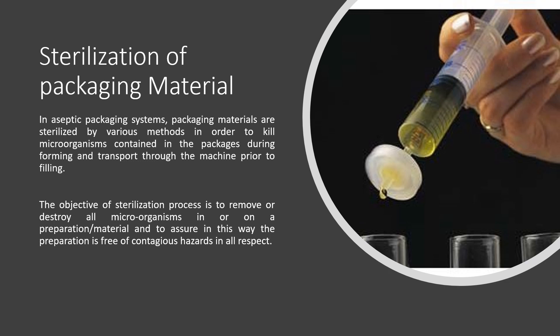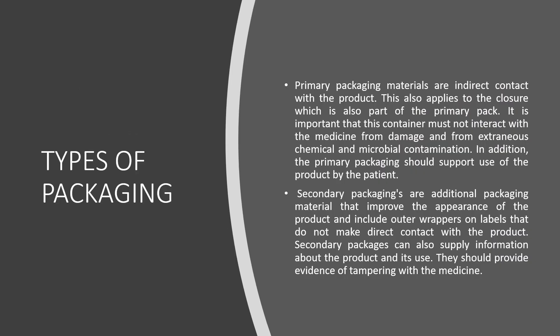Sterilization is a very critical part of the manufacturing process. When we talk about the different types of packaging, there are two basic types: primary packaging material, which is in direct contact with your medicament — it is important that these containers should not interact with the medicine or cause damage or extra chemical and microbial contamination. The other type is secondary packaging, which has the main purpose of avoiding contamination and improving the appearance of the product. That includes outer wrappers and labels not in direct contact with the product. Secondary packaging can also provide information about the product and its use and should provide evidence of tampering with the medicine.